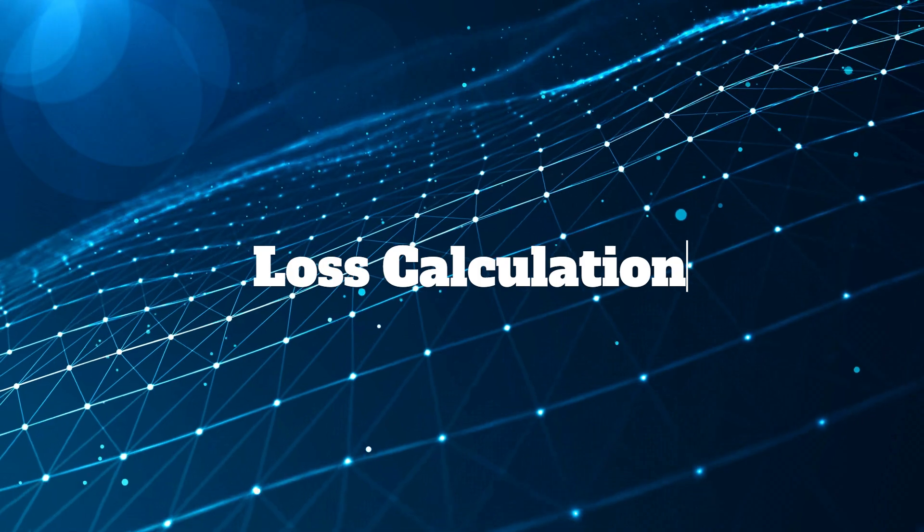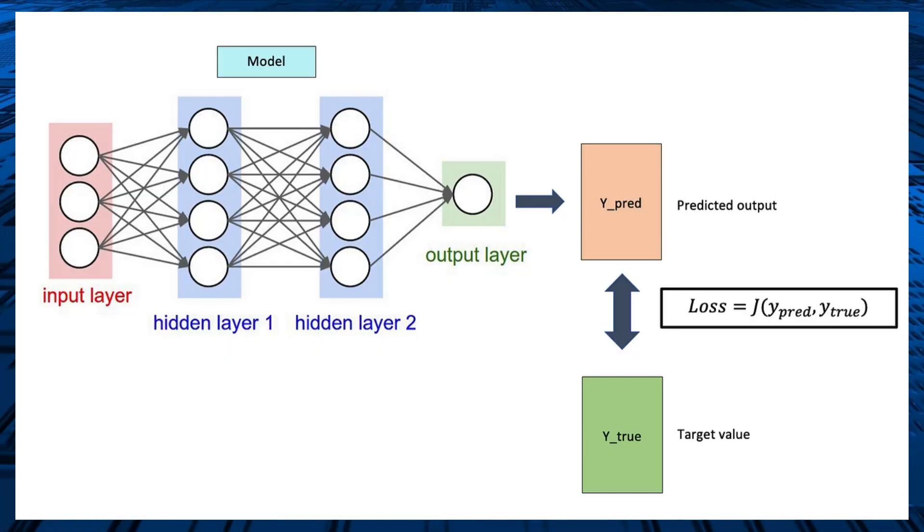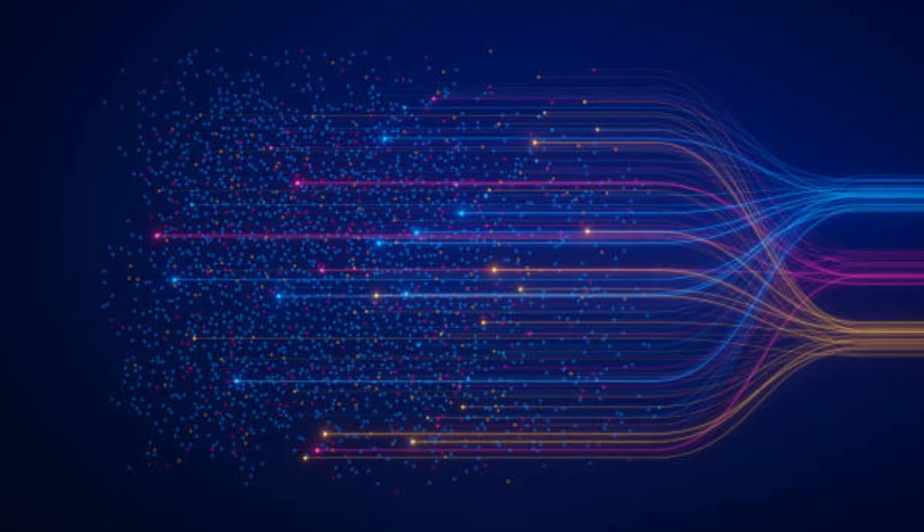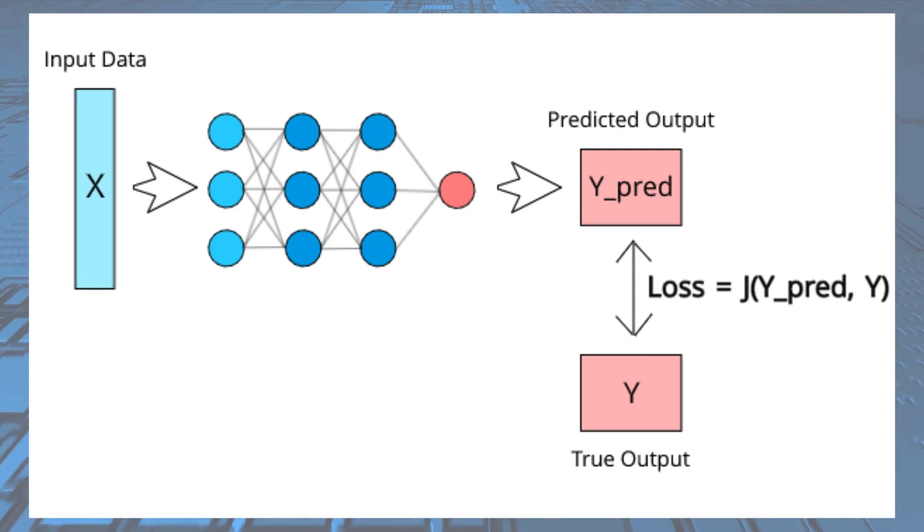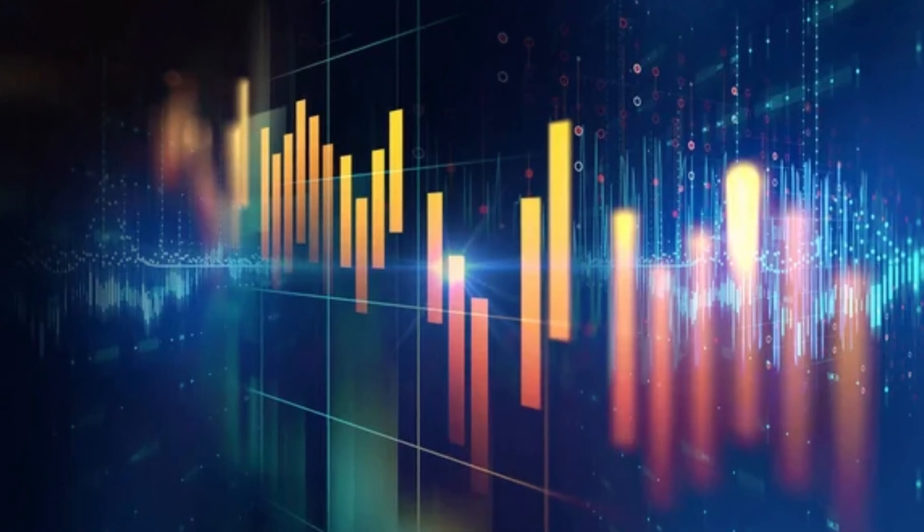The output of the model is compared to the ground truth labels or targets using a loss function which measures the difference between the predicted output and the actual output. The goal of training is to minimize this loss function by adjusting the model's parameters.